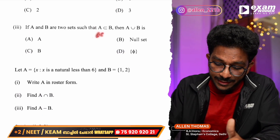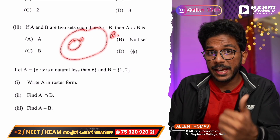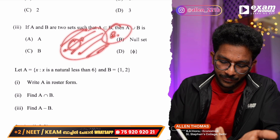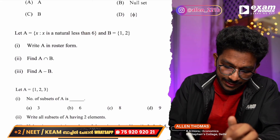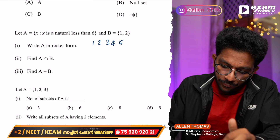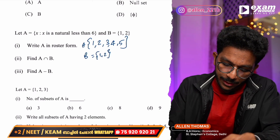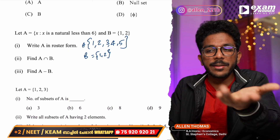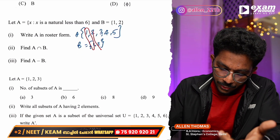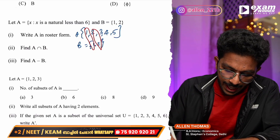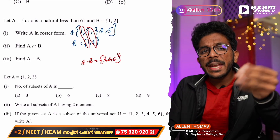Next question: If A and B are two sets and A is a subset of B, then A union B equals B. If A is a subset of B, every element of A is already in B, so A union B is simply B. Next: x is a natural number less than 6 — that is {1, 2, 3, 4, 5}. We put this in roster form. A intersection B gives the common elements {1, 2}.